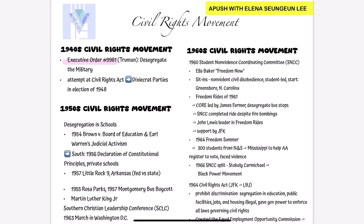During this time, there was also an attempt at passing a Civil Rights Act. However, opposition from the segregationist parties in the 1948 election hindered its progress, and it actually led to the parties splitting in the election of 1948. But the fight for equality was just getting started.